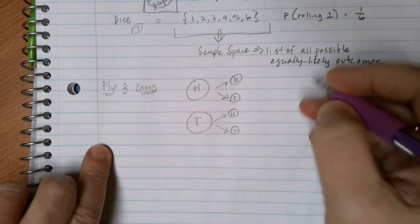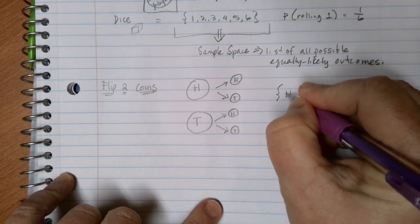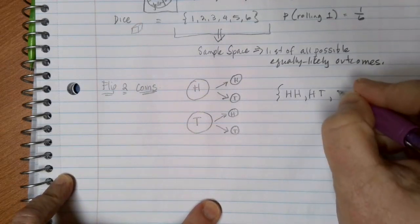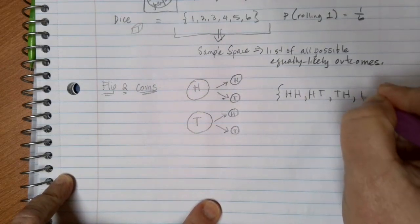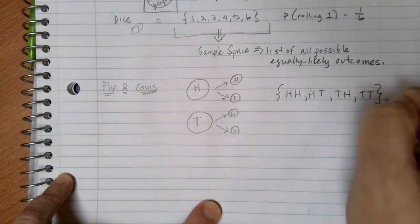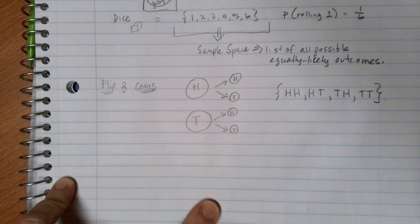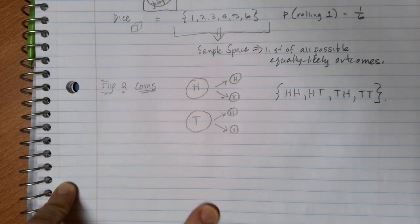If I wanted to write out my sample space for flipping two coins, I actually end up with four different options. I have heads followed by heads, heads followed by tails, tails followed by heads, and tails followed by tails. I have every option for my first value, and then each of those gets all the options for the second flip as well.